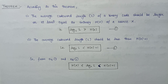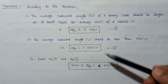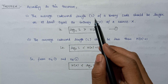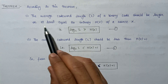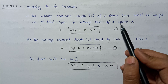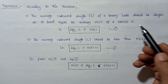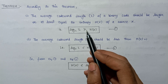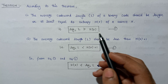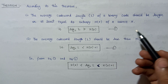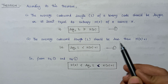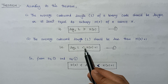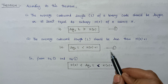Now let's look at Shannon's noiseless coding theorem. According to this theorem, the average codeword length L of a binary code should always be greater than or equal to the entropy H(x) of the source. In mathematical terms: log base 2 of L ≥ H(x) — this is equation 1. Similarly, the average codeword length should always be less than H(x) + 1, giving us: log base 2 of L < H(x) + 1 — this is equation 2.